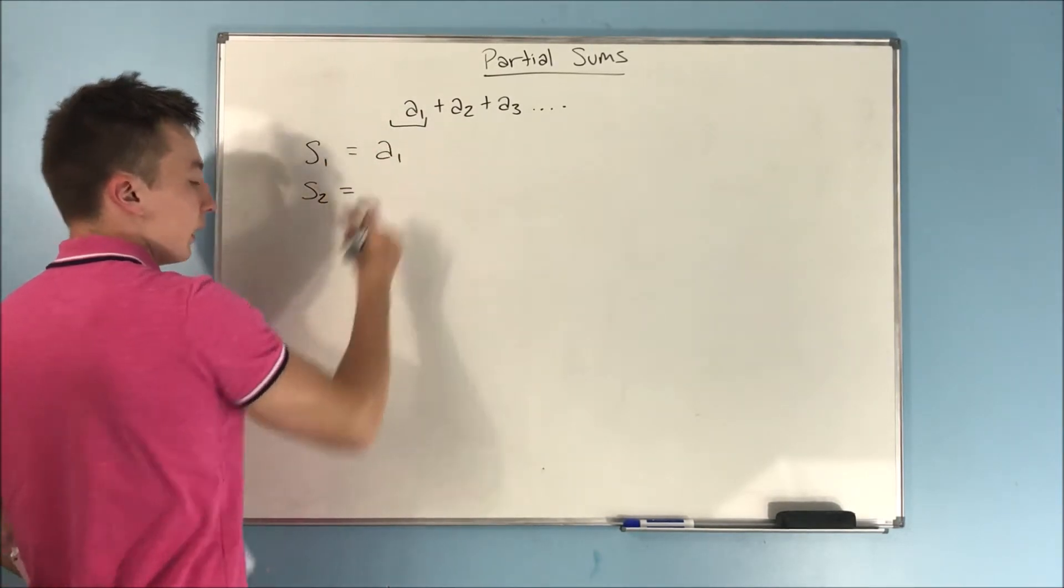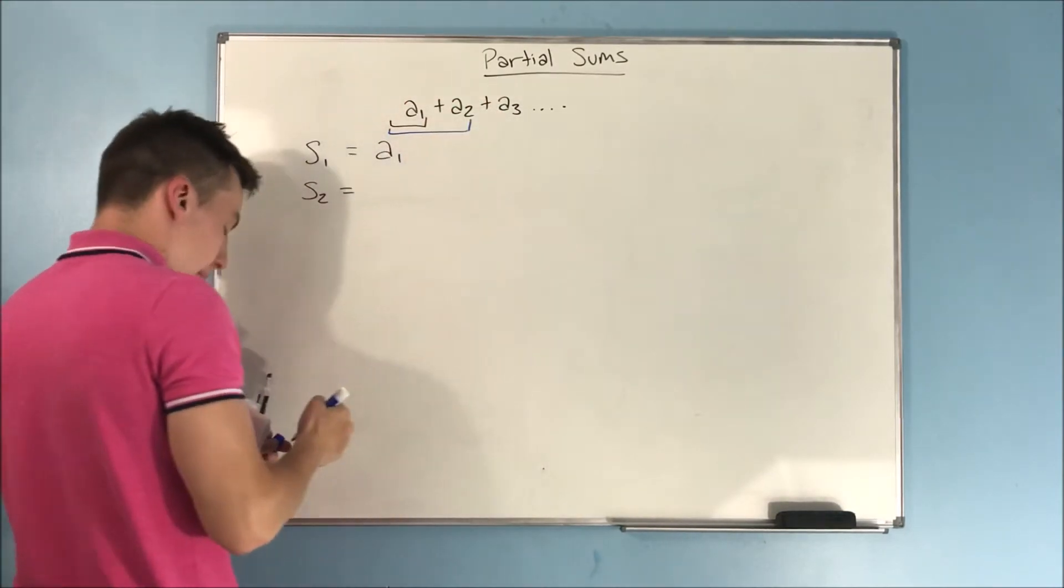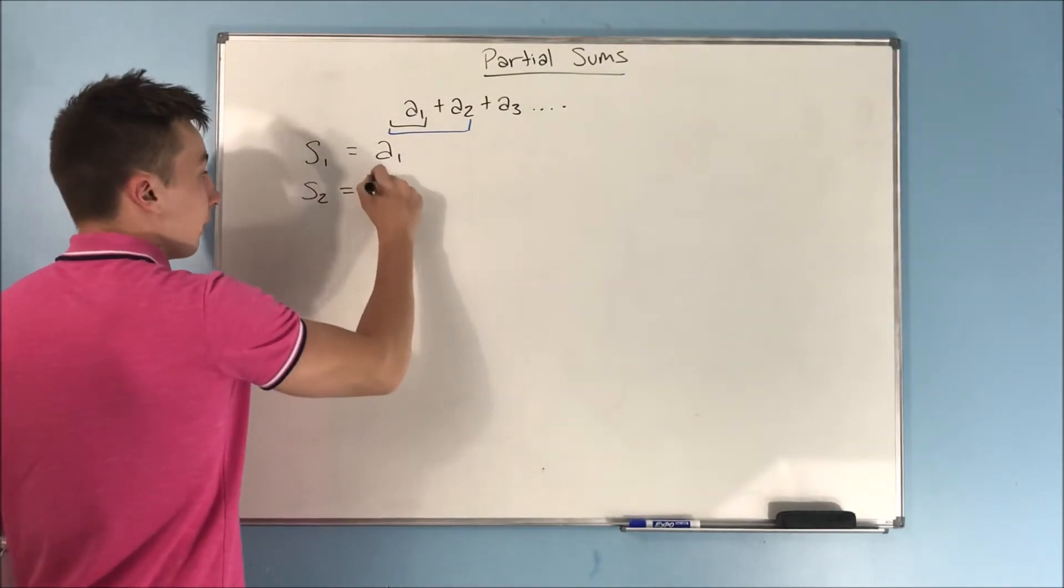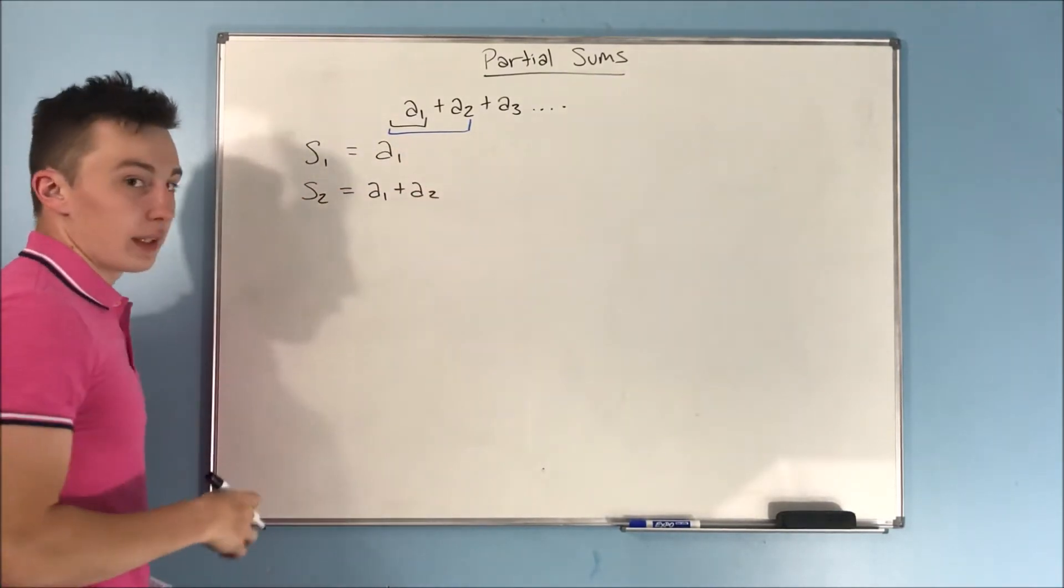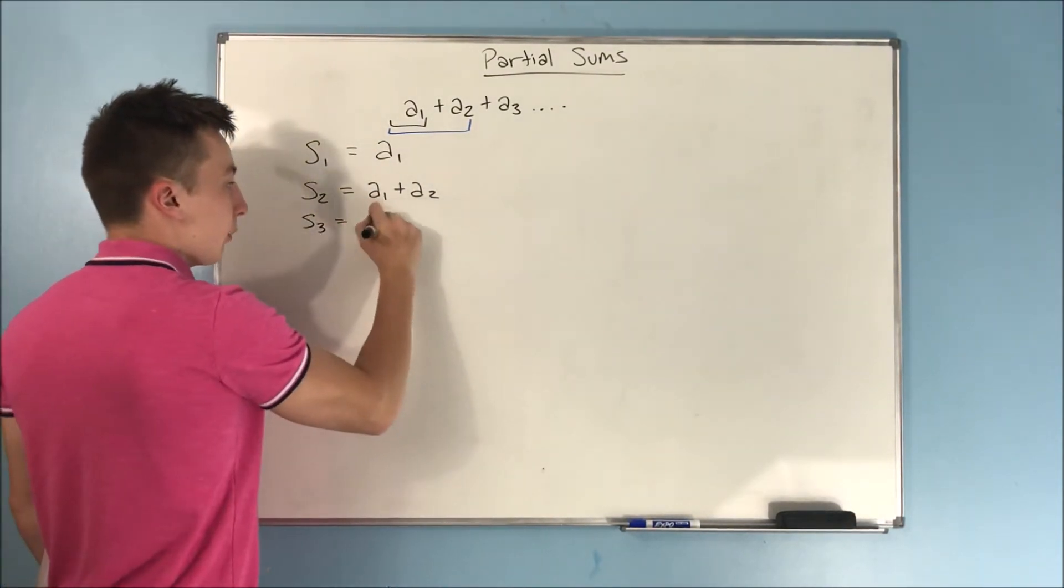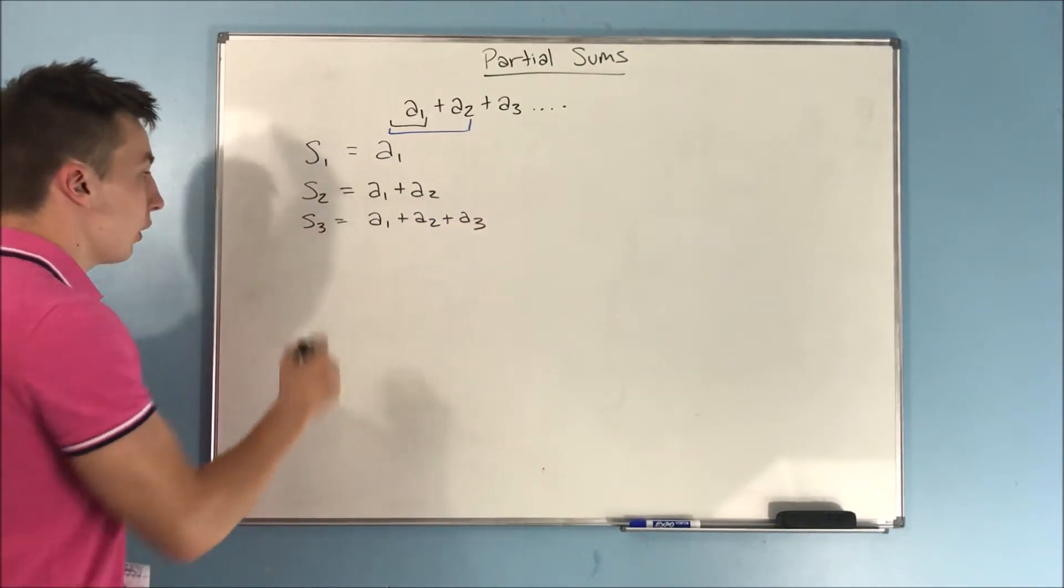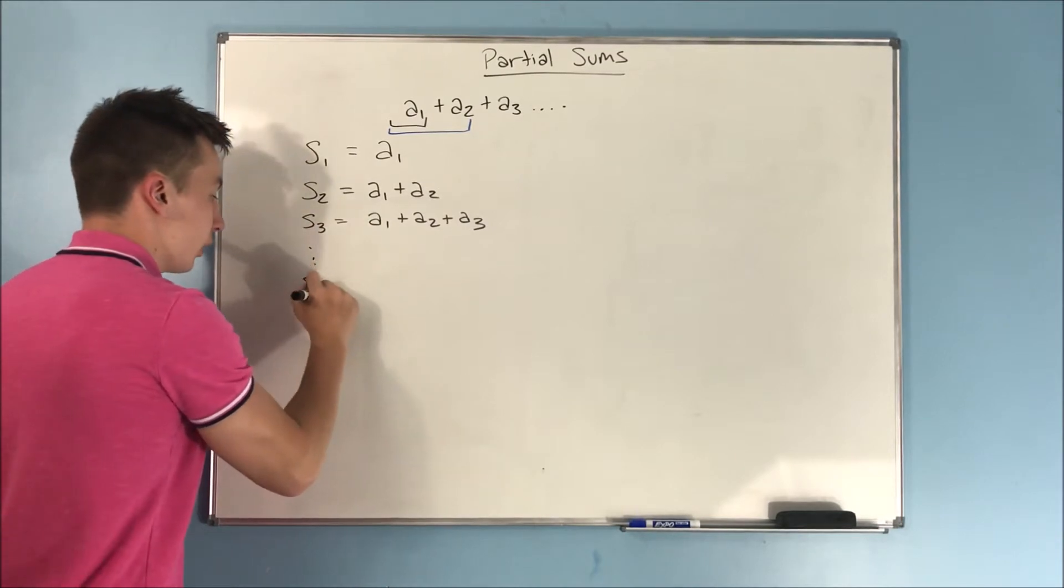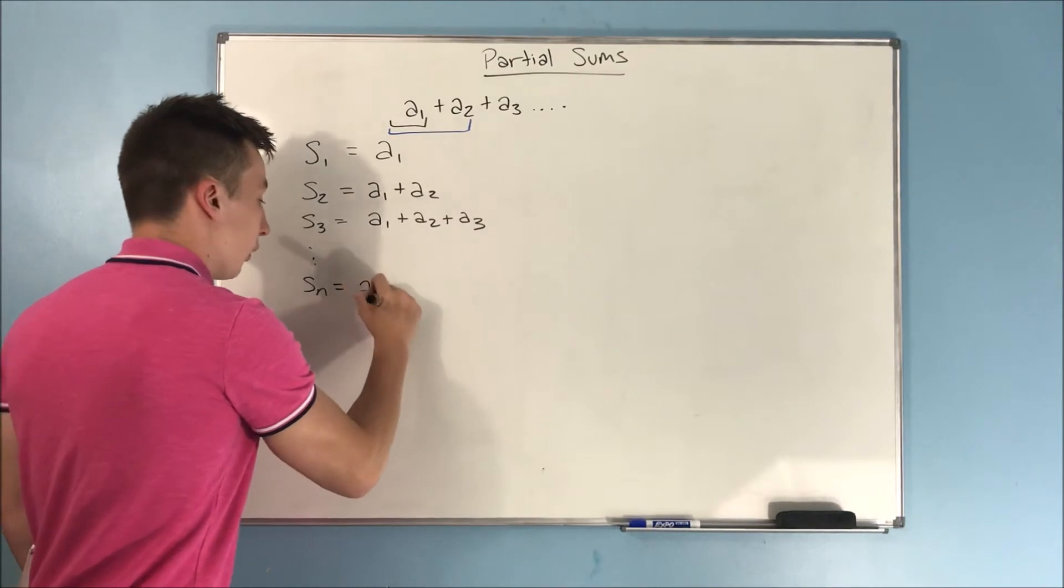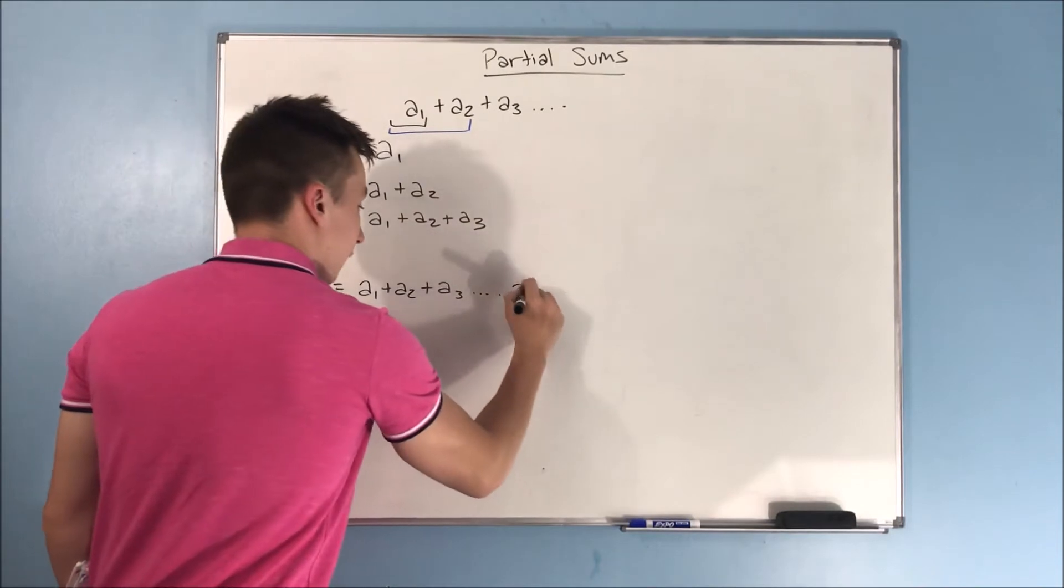For s sub two, it's going to be this piece right here. A sub one plus a sub two. It's the sum of the first two terms in the sequence. S sub three, that's going to be a sub one plus a sub two plus a sub three. And so on and so forth. This goes on to s sub n, which is going to be a sub one plus a sub two plus a sub three on to a sub n.